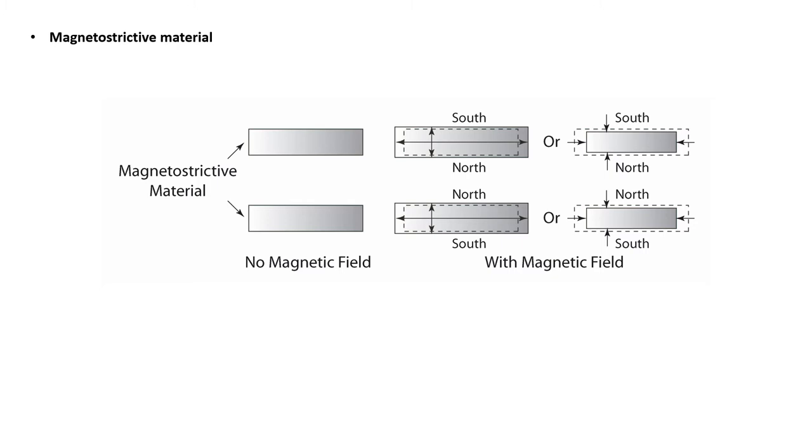Magnetostrictive materials exhibit a change in volume when subjected to a magnetic field. This is due to a rearrangement of the magnetic field within the structure of the material under the influence of magnetic field. The volume change can be either an increase or decrease depending on the specific material.